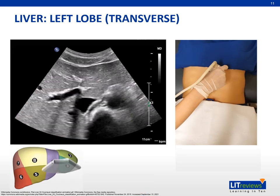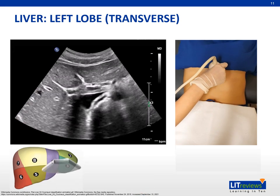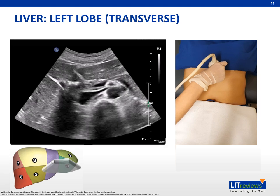As we continue to angle the transducer caudally, the splenic vein comes into view. At the level of the splenic vein, we can see the falciform ligament, which is echogenic. It is an important landmark demarcating segment 3 from segment 4b. In this plane, segments 2 and 4a are no longer visualized.